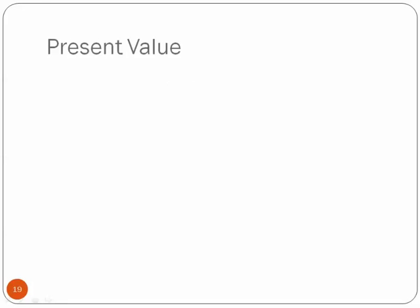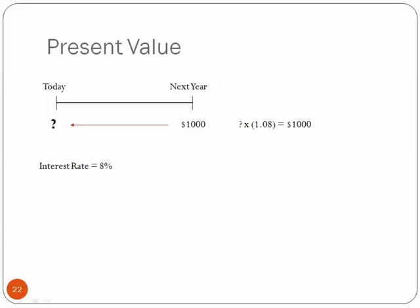So now let's talk about going backwards, the present value. So we know, let's say next year we're going to be receiving $1,000. What would that be worth today? Let's say we have an interest rate of 8%. We know that the amount today, the question mark, times 1.08 equals $1,000.